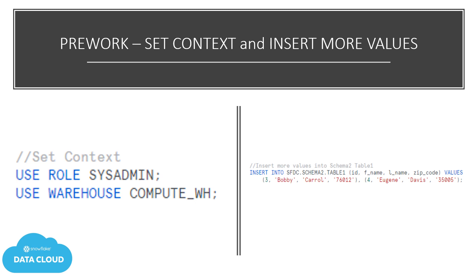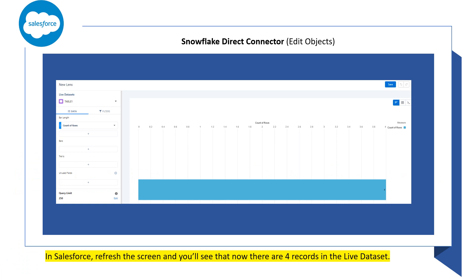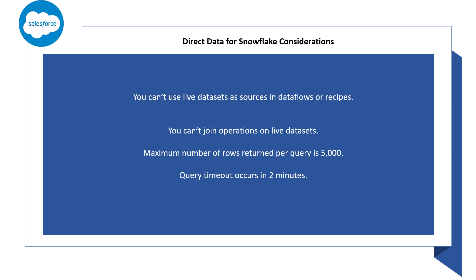Now you'll want to add a few more records in Snowflake to confirm that the live connection will automatically be updated in real time with the new records inserted into Snowflake. As expected, if we refresh the screen, we'll see that there are now a total of four records in the live data set in Salesforce. There are some important considerations for the Salesforce Analytics Studio direct data connection: you can't use live data sets as sources in data flows or recipes, and you can't perform join operations on live data sets.